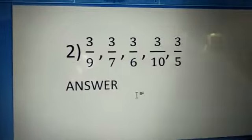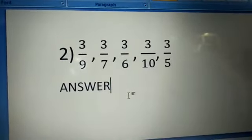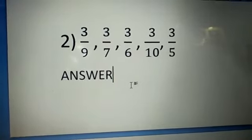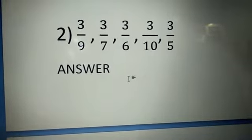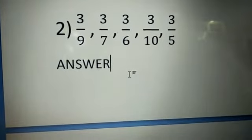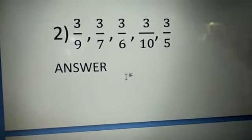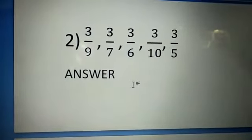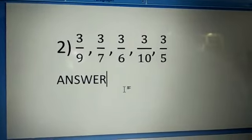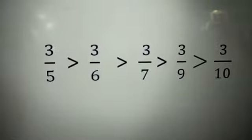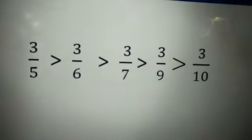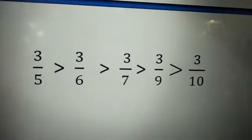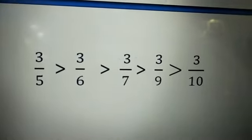We already studied ascending order. At your level, you have to arrange using a trick. After you study LCM, you can do it the proper way. So I will give you one trick to follow and then you can arrange in descending order very easily. We would normally do this problem using LCM, but I will tell you one trick. Since every numerator is the same and the denominator is different, you arrange the denominator as you like in ascending order.